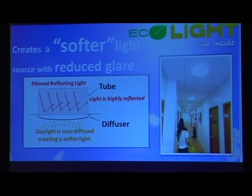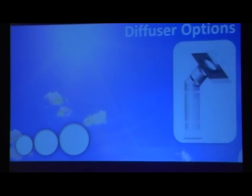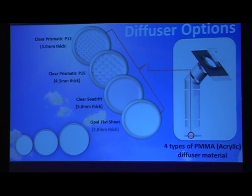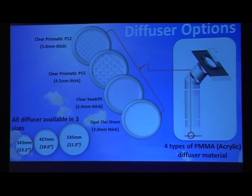All the lights you see there are Ecolight. The diffuser comes in three to four types and we have three sizes: 13.5 inch, 18 inch, and the biggest one, 21 inch.